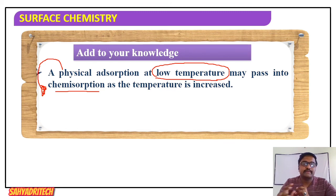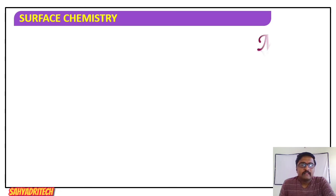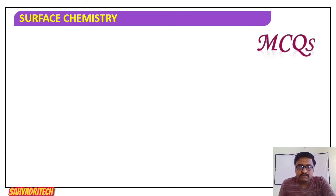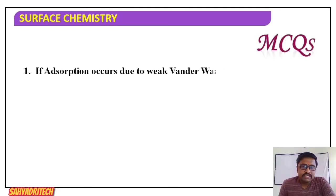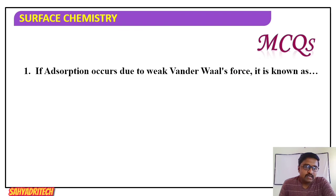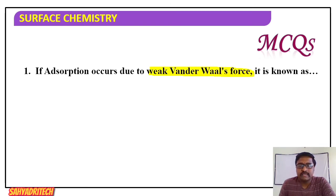Now let's go through some MCQs. First question: adsorption occurs due to weak van der Waals forces. If adsorption occurs due to weak van der Waals forces of attraction, then it is known as — options: A) physisorption, B) chemisorption, C) both, D) none. The answer is physisorption, option A.